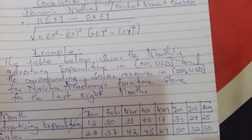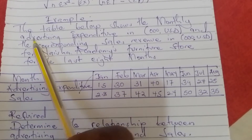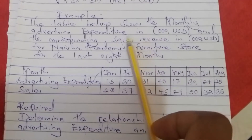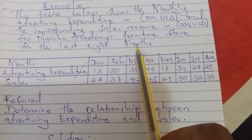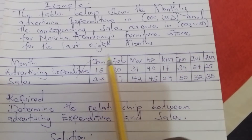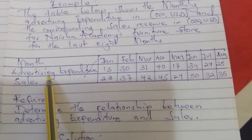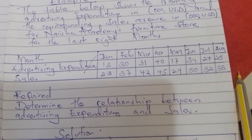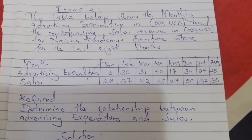We are going to have an example on correlation. The table below shows the monthly advertising expenditure in thousand US dollars and the corresponding sales revenue in thousand US dollars for Nation Academy Furniture Store for the last eight months — January, February, March, April, May, June, July, and August. The advertising expenditure and the sales are given for all eight months.